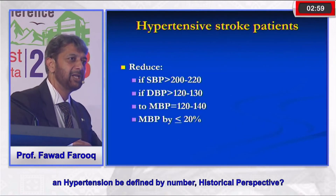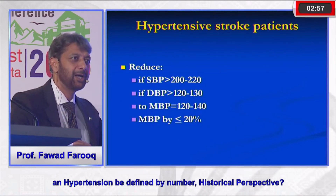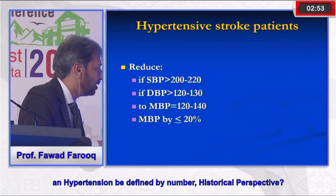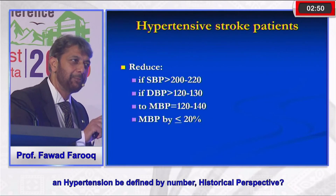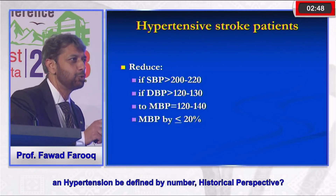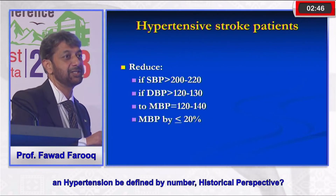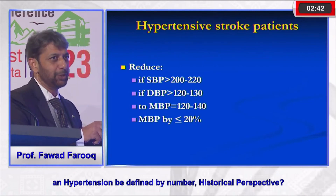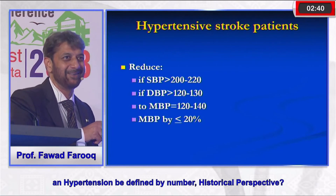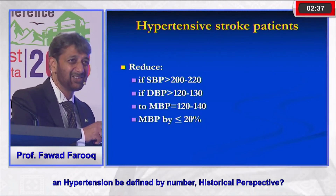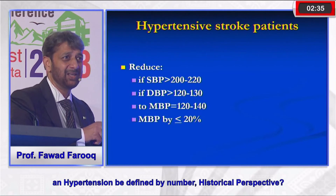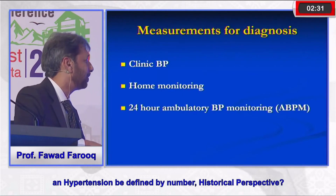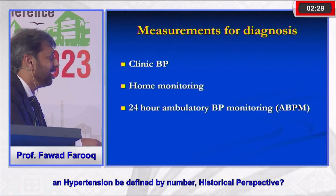In a hypertensive patient who develops a stroke, the approach changes again. During the initial phase of stroke, do not bring blood pressure below 200 — maintain systolic blood pressure between 200 and 220, as lowering it further will harm the patient. Again the point is: it is not the number, but the patient's characteristics, status, and stage of disease that matter.